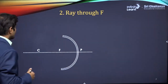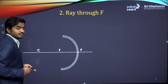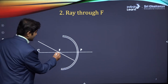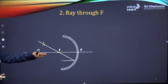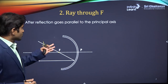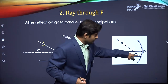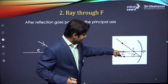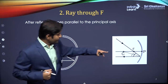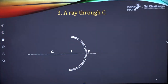Rule two: a ray passing through the focus, after reflection, is parallel to the principal axis. Again, you can draw a careful ray diagram: the incident ray passes through the focus, and CO acts as the normal, with equal angles of incidence and reflection.